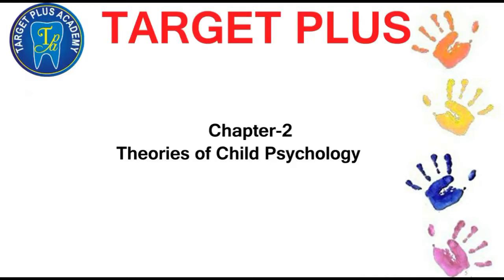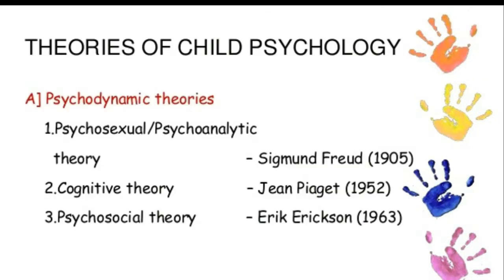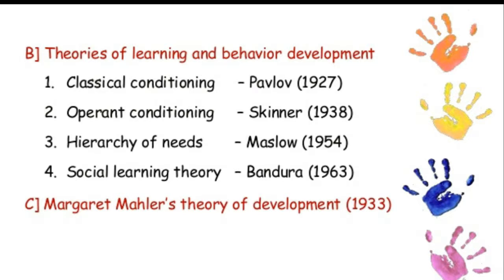Now next we are going to discuss chapter 2, Theories of Child Psychology. Child psychology theory can be classified into three groups: psychodynamic theory, theory of learning and development of behavior, and Mahler theory of development. Psychodynamic theory includes classical conditioning by Pavlov, operant conditioning by Skinner, hierarchy of needs by Maslow, and social learning by Bandura.